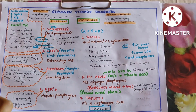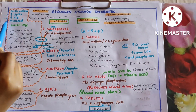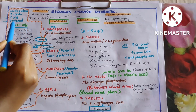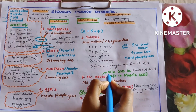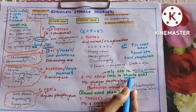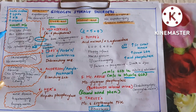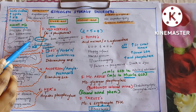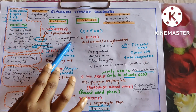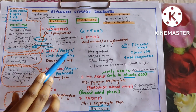Von Gierke's presents with lactic acidosis, hyperlipidemia, ketosis, and hyperuricemia. Overall most common GSD is liver GSD; in muscle GSD the most common is McArdle's, which is most common in adults and adolescents. The clincher point is doll-leg facies with thin extremities, massive hepatomegaly, and renomegaly — but there is no splenomegaly in Von Gierke's.